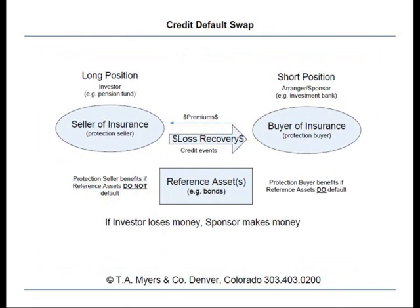In order to understand the Goldman Sachs Abacus Synthetic CDO Transaction, it's first necessary to be familiar with the concept of a credit default swap. A credit default swap, or CDS, is simply a fancy name for an insurance contract between one investor, or counterparty, that seeks protection from the decline in value of a particular reference entity — for example, a bond — and another counterparty that is willing to provide such protection in exchange for insurance premiums to be paid by the counterparty seeking the protection.